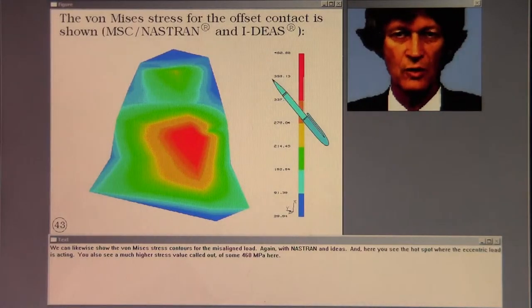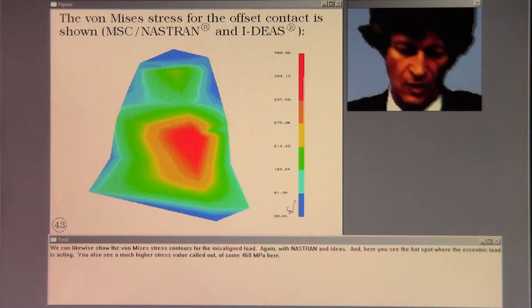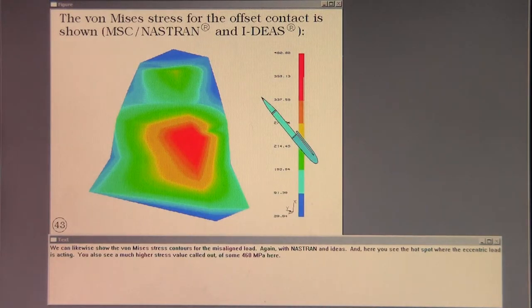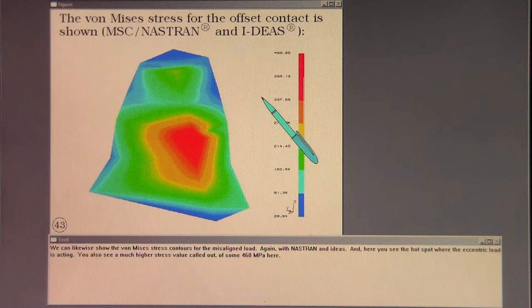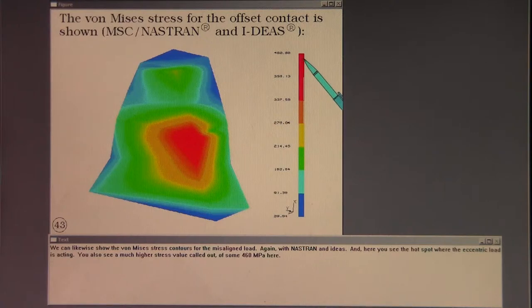We can likewise show the Von Mises stress contours for the misaligned load, again with Nastran and Ideas. And here you see the hot spot where the eccentric load is acting. You also see a much higher stress value called out of some 460 megapascals here.